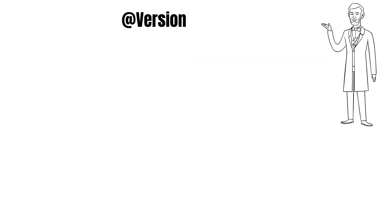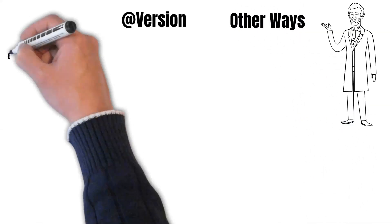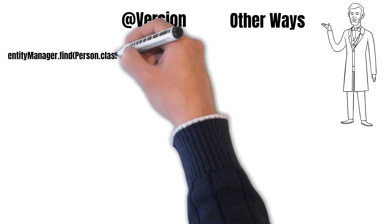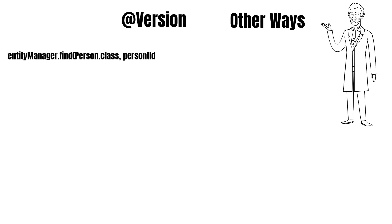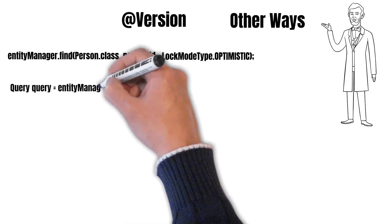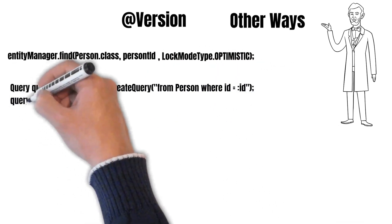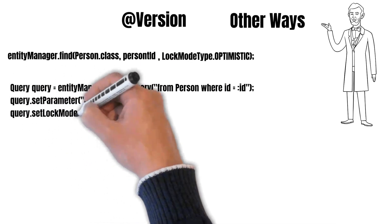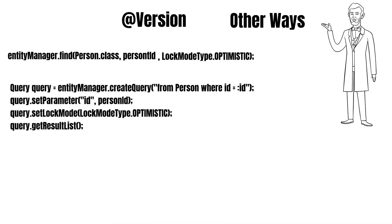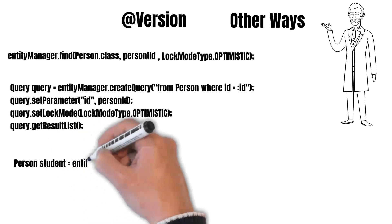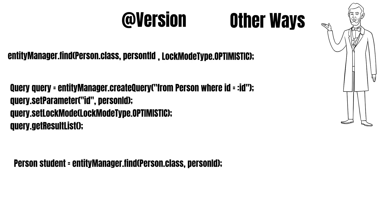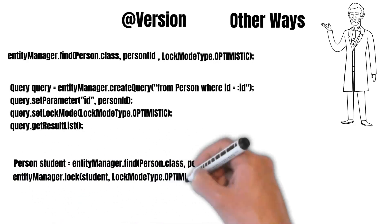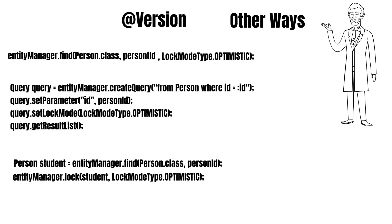When we use the version property, optimistic locking is available by default, but there are other ways to request it explicitly as well. For example, when using the EntityManager.find method — passing it the Person entity class reference and the person ID — we can additionally pass the lock mode as OPTIMISTIC. Similarly, when running a query selecting a person by person ID and passing the ID as a parameter, we can set the lock mode as OPTIMISTIC to get the results. We can also explicitly set the lock mode as OPTIMISTIC on the entity after reading it.